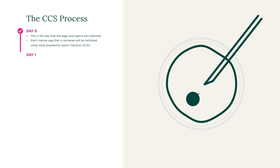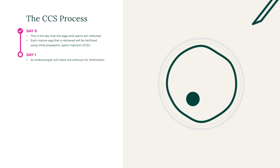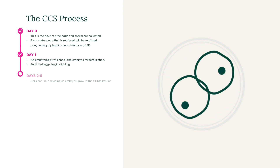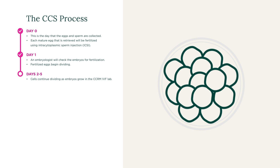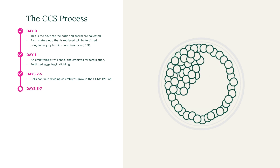On day one, the embryologist will come into the lab and check the embryos for fertilization. Over the next several days, the fertilized egg will begin to grow and divide. Around day five through day seven, the embryos will be made up of approximately 80 to 100 cells, which is known as the blastocyst stage of development.